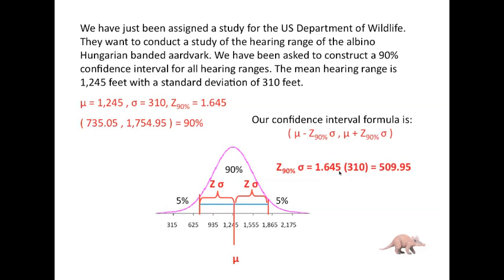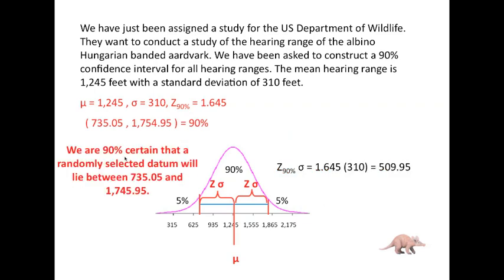Our confidence interval formula is Mu minus Z times sigma and Mu plus Z times sigma. The Z·sigma value is 1.645 times 310. So the distance from the lower bound to the mean, and from the mean to the upper bound, is 509.95 units each. We are 90% certain that a randomly selected datum will lie between 735.05 and 1,754.95 feet. We are 5% certain it will fall below 735.05, and 5% certain it will lie above 1,754.95 feet.